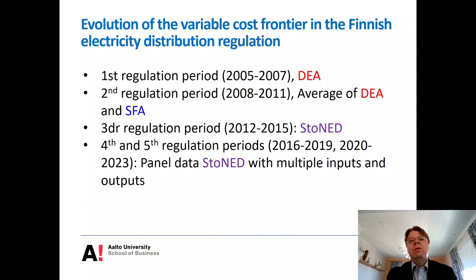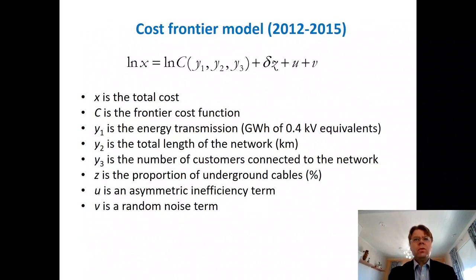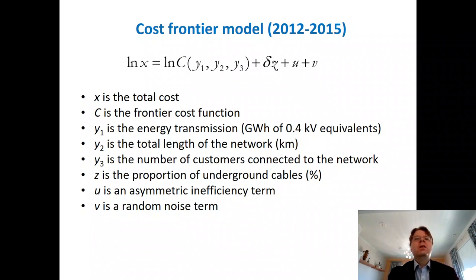For the fourth and fifth regulation periods, we developed the framework further together with the regulator. Now the estimation is based on panel data, we also take into account multiple inputs and outputs, and also bad outputs modeling the interruptions. But in this course, we mainly focus on the case of the third regulation period. This is the brief characterization of the cost frontier model that the regulator was using in the 2012–2015 period, which allows us to more easily see DEA and SFA as special cases.